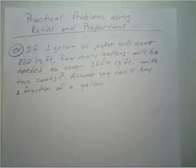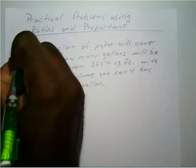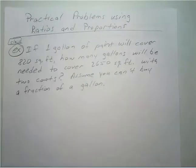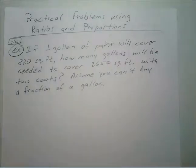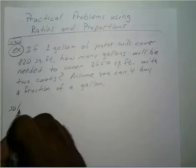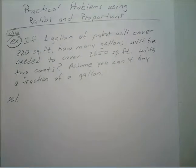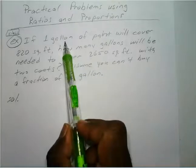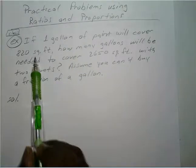Go ahead and press pause and try to tackle this one on your own. Assuming you've pressed pause and at least gave this one a try, let's go ahead and verify your answer. We know we're going to use ratios and proportions, and we know that one gallon will cover 820 square feet.